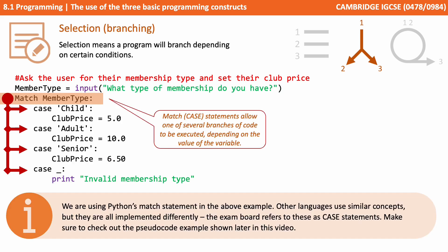An alternative to the if statement in Python is the new match statement. Now this has only become available from Python 3.10 onwards. Match statements allow one of several different branches of code to be executed depending on the value of a variable. So here we're asking the user to enter in what type of membership they have. It's then got a series of case statements. If they type 'child' it executes the indented line of code underneath that case statement and sets their club price to 5.